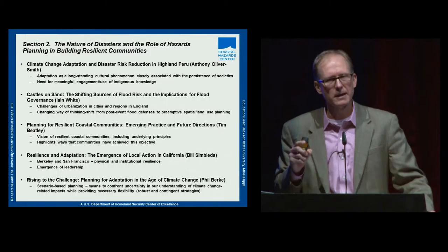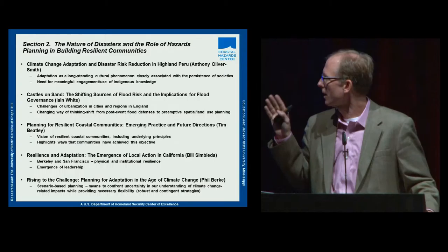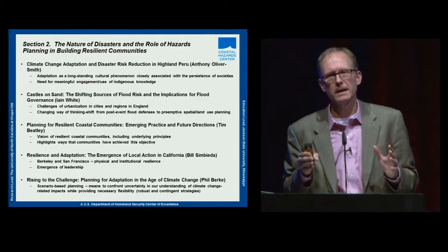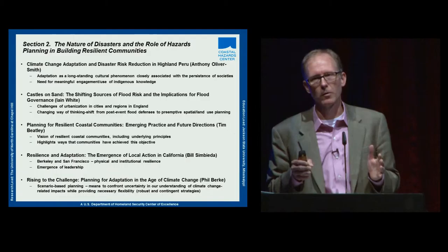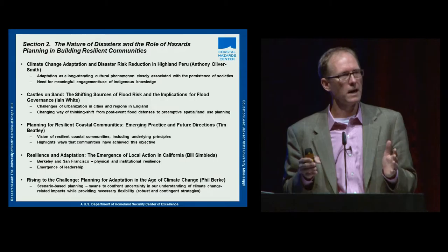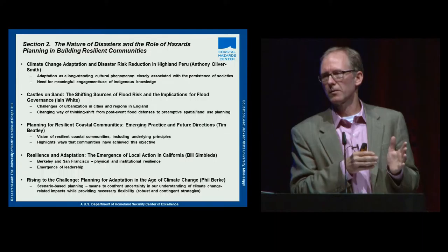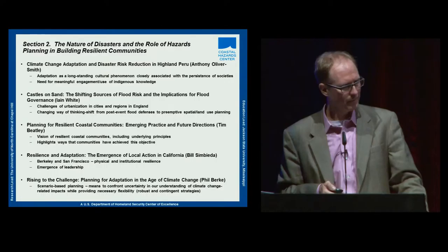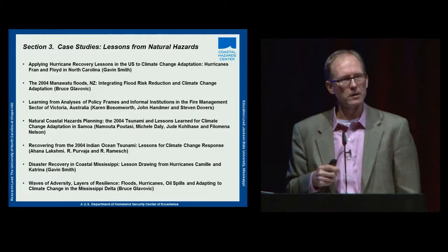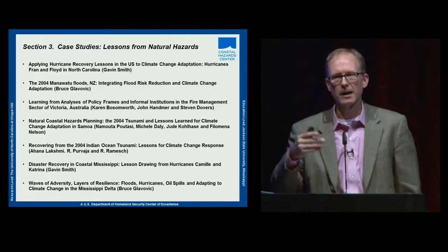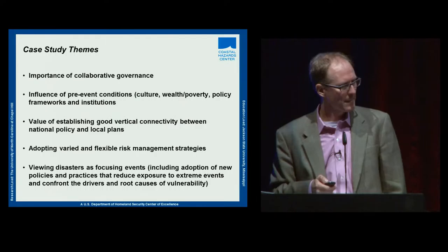We conducted an international assessment of nations and communities around the world — India, Samoa, Australia, the UK, Peru, and others — looking at nations that experienced a major event, whether a flood or, for example, an earthquake in Peru. We examined the lessons learned from those disasters in terms of hazard mitigation and how they could be applied to climate change adaptation. We also looked at flooding in New Zealand, earthquake risk reduction in California, and bushfires in Australia, to give a sense of the breadth of different hazards examined.